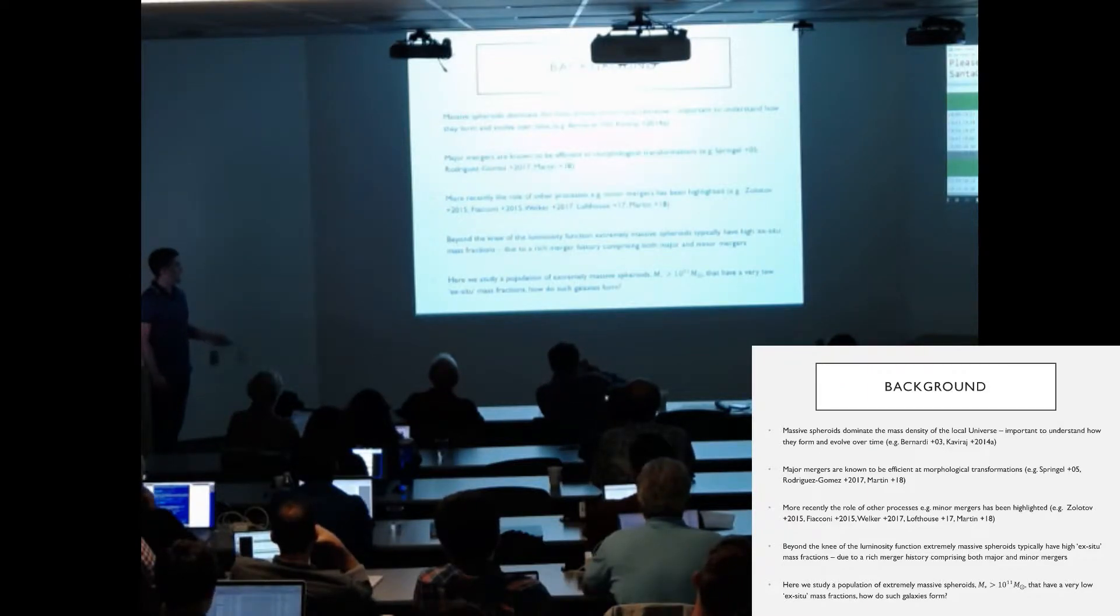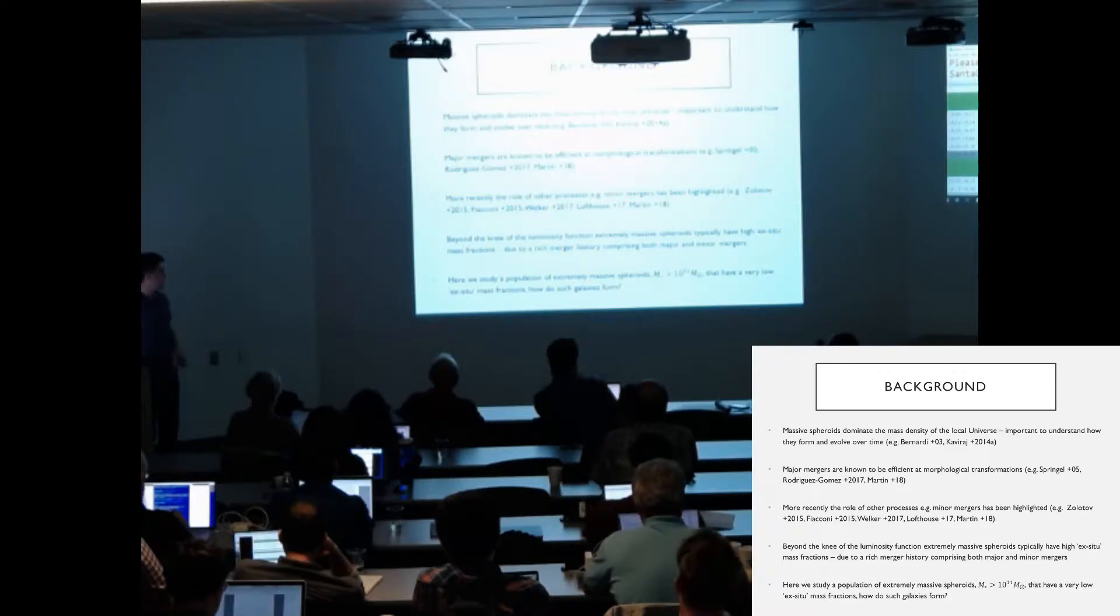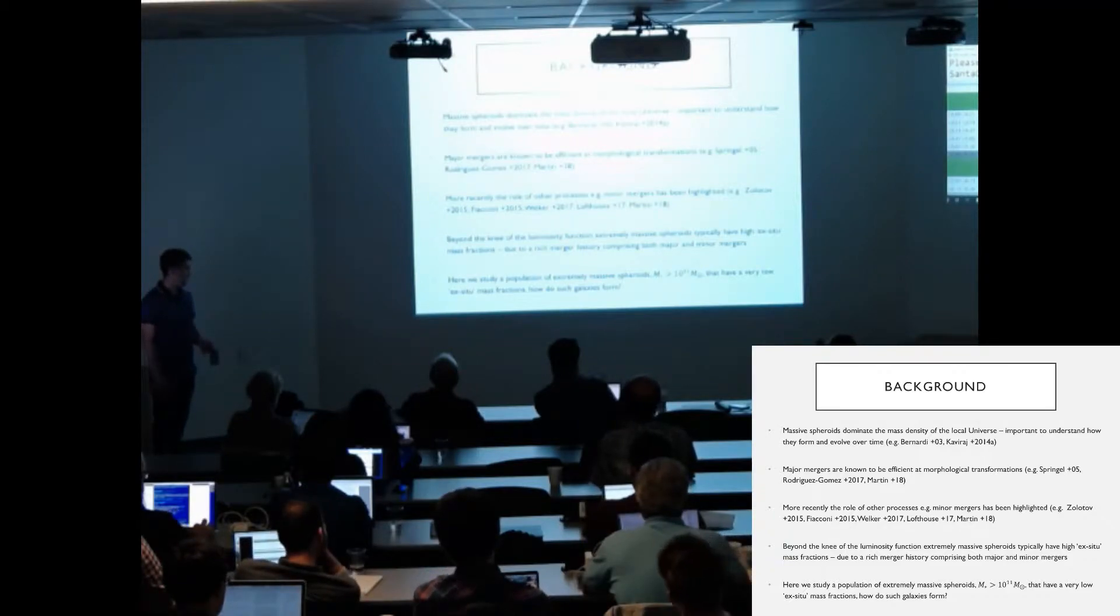Beyond the knee of the luminosity function, extremely massive spheroids typically have high ex situ mass fractions. This is due to a rich merger history comprising of both major and minor mergers. However, in this study we show a population of extremely massive spheroids that have low ex situ mass fractions. So the question is, how do these galaxies form?